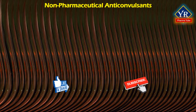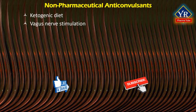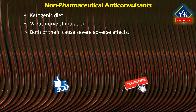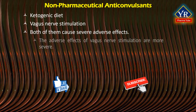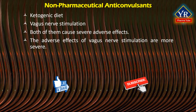Non-pharmaceutical anticonvulsants: the ketogenic diet and vagus nerve stimulation are alternative treatments for epilepsy without the involvement of pharmaceuticals. However, both can cause severe adverse effects. The adverse effects of vagus nerve stimulation are more severe and its efficacy is questionable in comparison to medications or the ketogenic diet.